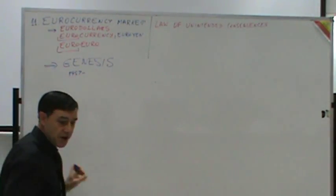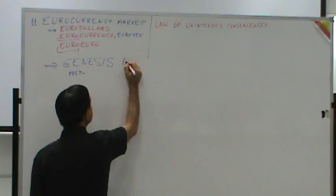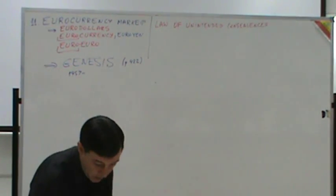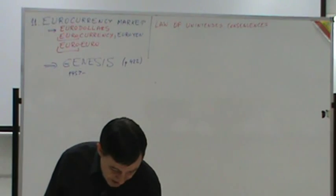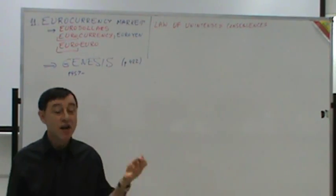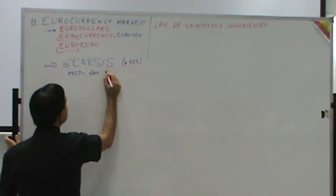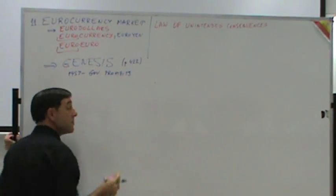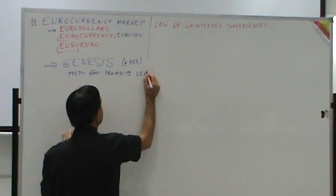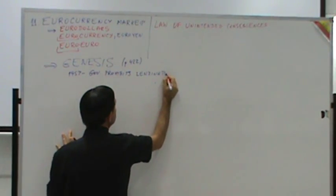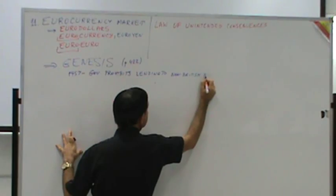1957 was the first simple step — on page 422. The British government prohibits banks from lending pounds to finance non-British trade. The government prohibits lending to non-British businesses.